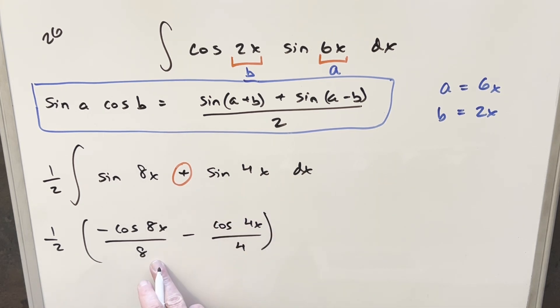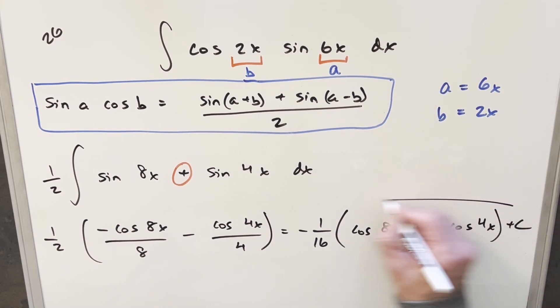And I think I will actually simplify this, I think I'll factor a minus one eighth out of this. So what I can do is have minus one over 16 in front, then this first term just becomes cosine 8x. And then because we factor that minus one eighth out here, this is going to become a plus two cosine 4x, put a plus c, and that's it.